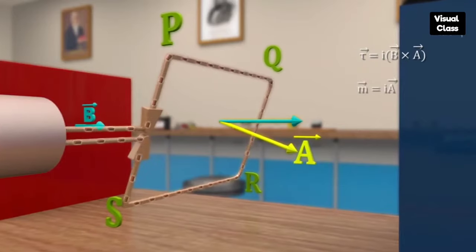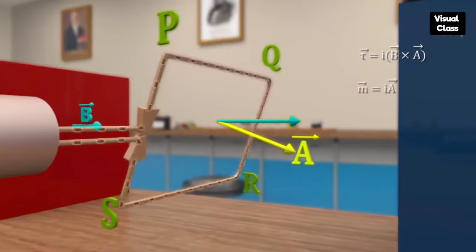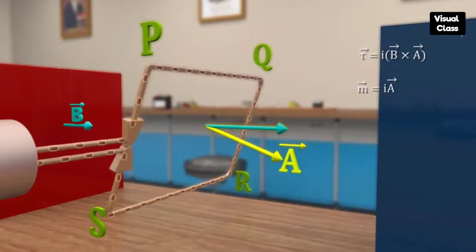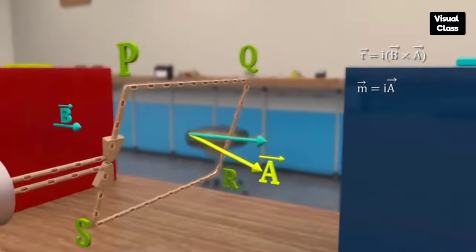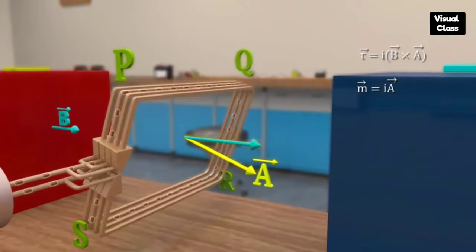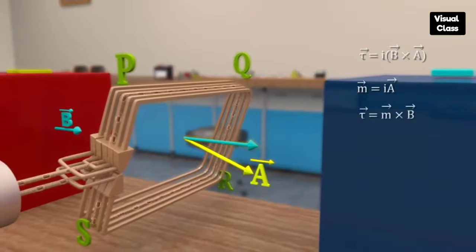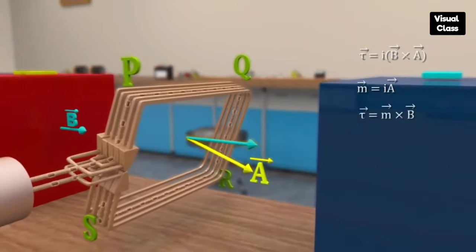IA bar can be replaced with a vector called magnetic moment. Magnetic moment of a loop is the product of current and area vector. Torque on a loop is simply M bar cross B bar.